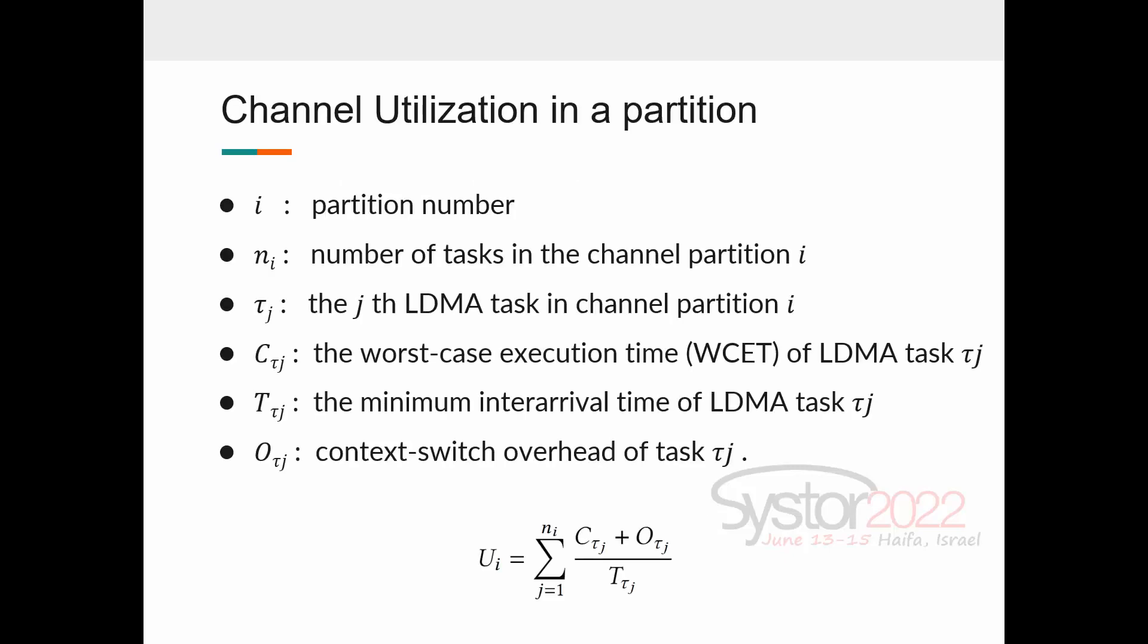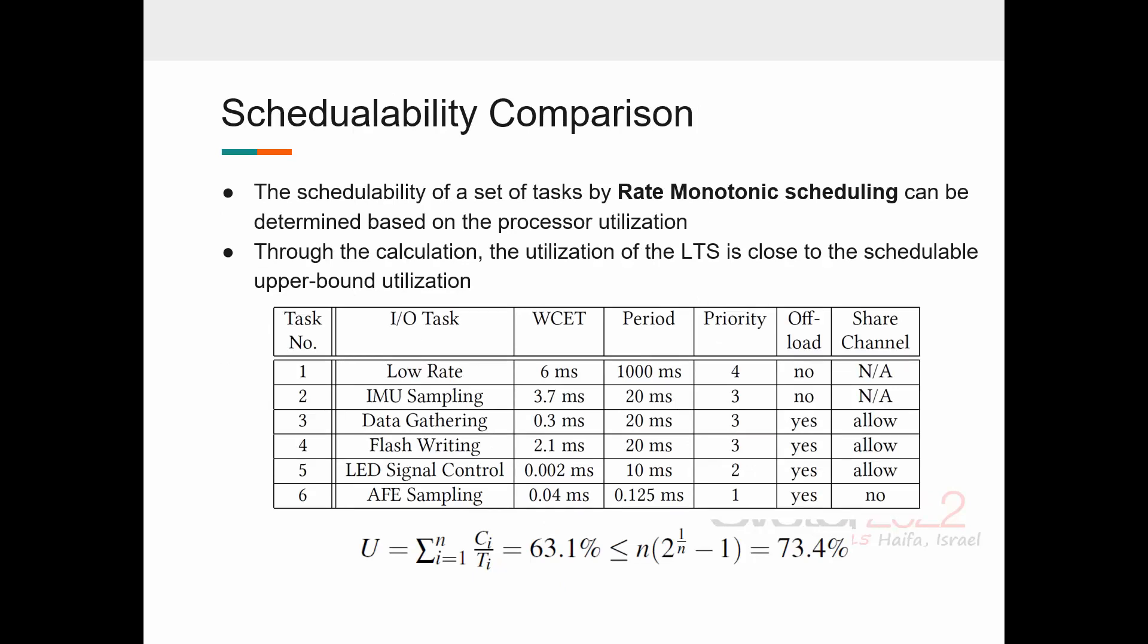And it's our evaluation and comparison. We first define channel utilization for channel partition I as follows. I is the partition number. N_i is the number of tasks in the channel partition I. Tau_J is the J's LDMA task in channel partition I. C_tau_J is the worst case execution time of LDMA task Tau_J. T_tau_J is the minimum inter-arrival time of LDMA task Tau_J. O_tau_J is the context switch overhead of task Tau_J. The schedulability of a set of tasks by rate monotonic scheduling can be determined based on the processor utilization. Through the calculation, the utilization of the LTS is close to the schedulable upper bound utilization. So, we consider it schedulable before offloading to the LDMA controller.